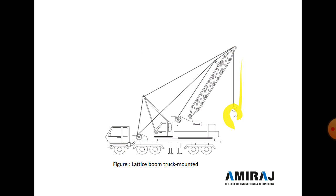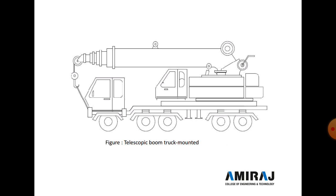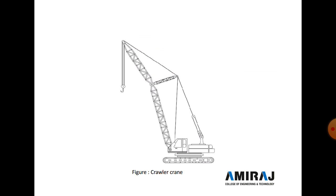The telescopic boom truck-mounted crane uses a telescoping mechanism where inner and outer circular hollow pipes move inside and outside like a telescope, and is mounted on a truck. The crawler crane has chains at the bottom instead of tires, with a boom and hook for lifting material — it is generally used at heavy construction sites.